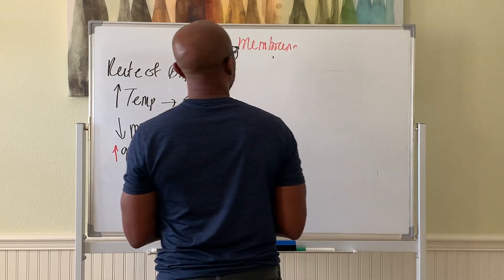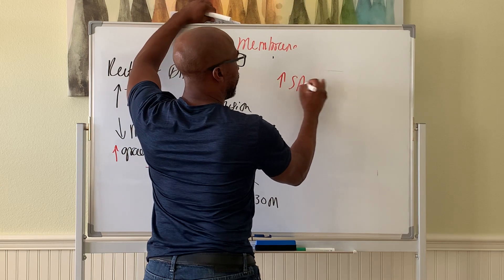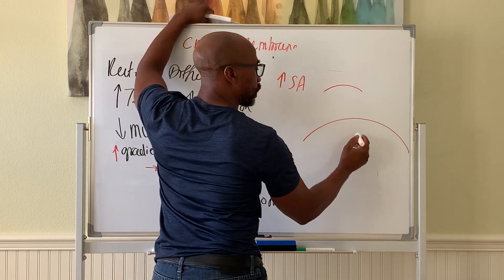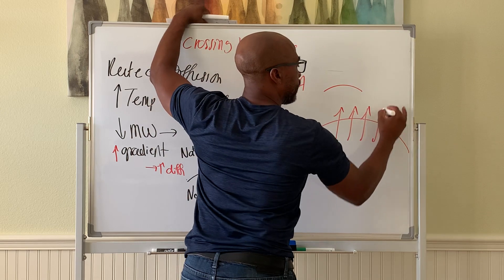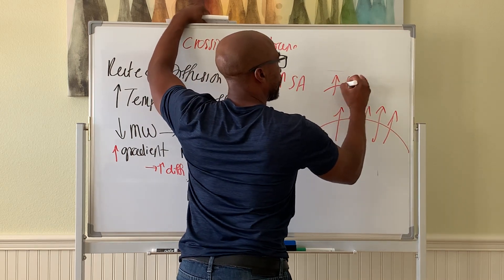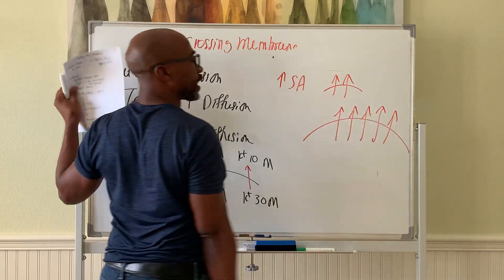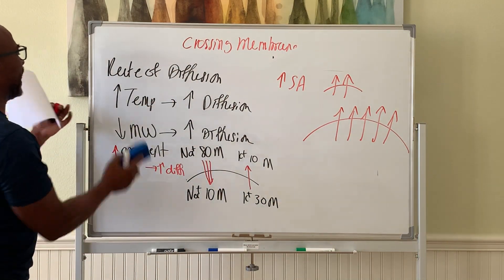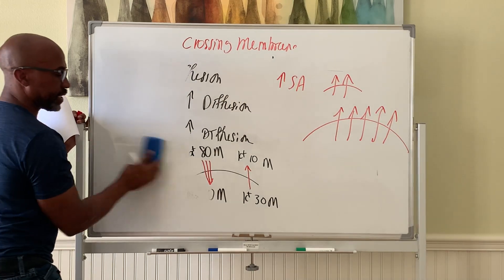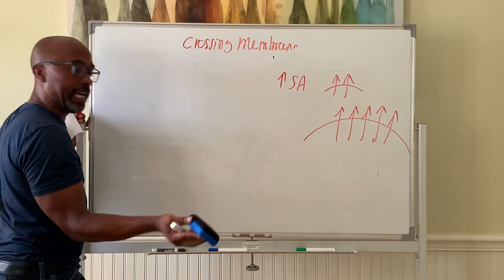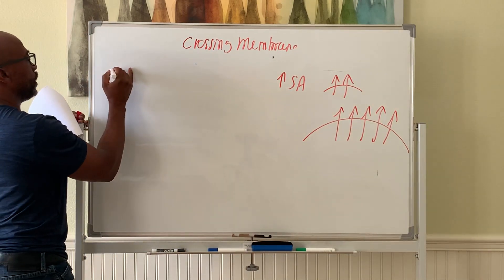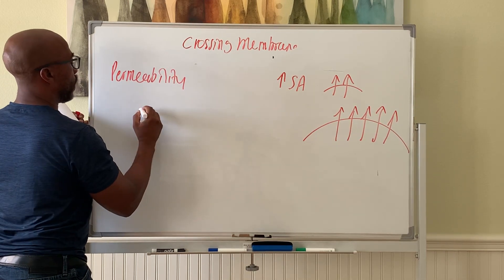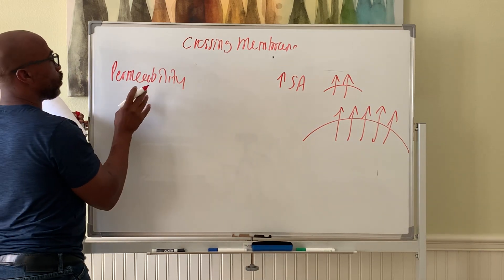Another factor affecting diffusion is surface area — how much space is available to cross over. A larger cell membrane allows more diffusion to occur. Additionally, permeability matters: even if a concentration gradient exists, if the cell membrane is not permeable to a substance, it won't move across.